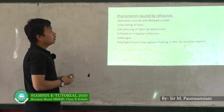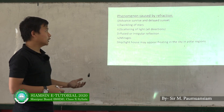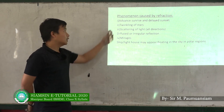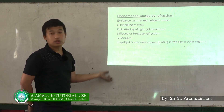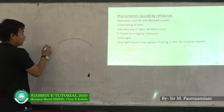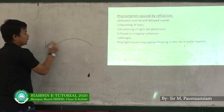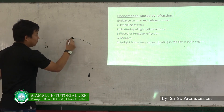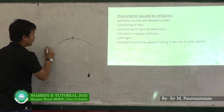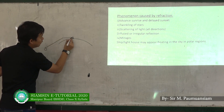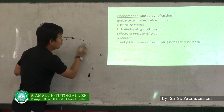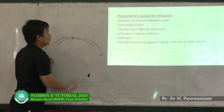Phenomena caused by refraction of light: the first is advanced sunrise and delayed sunset. Due to the refraction of light through the atmosphere, we can see the sun slightly before it actually rises and slightly after it sets. The bending of light through the atmosphere causes this effect.